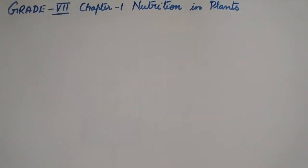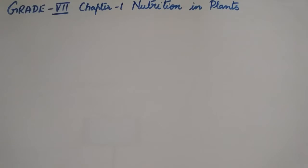Good day students. This is science class for grade 7, Chapter 1: Nutrition in Plants. In the last video session, we learned in detail the autotrophic mode of nutrition and the process of photosynthesis. In today's video session, let us understand the synthesis of food by plants other than carbohydrates.